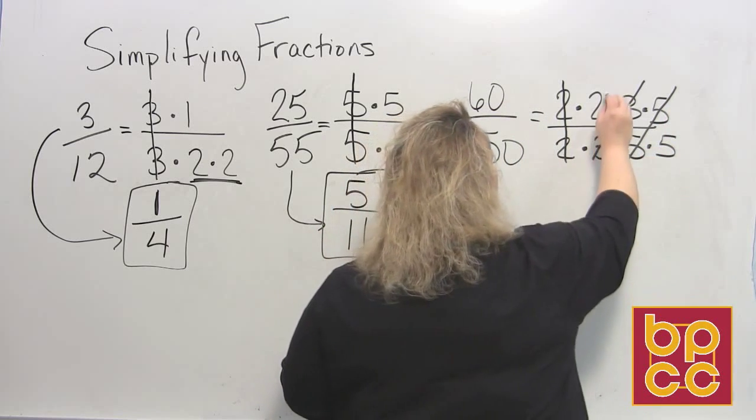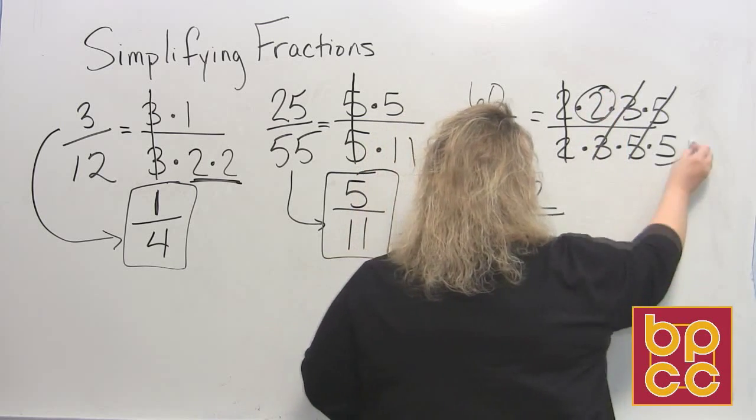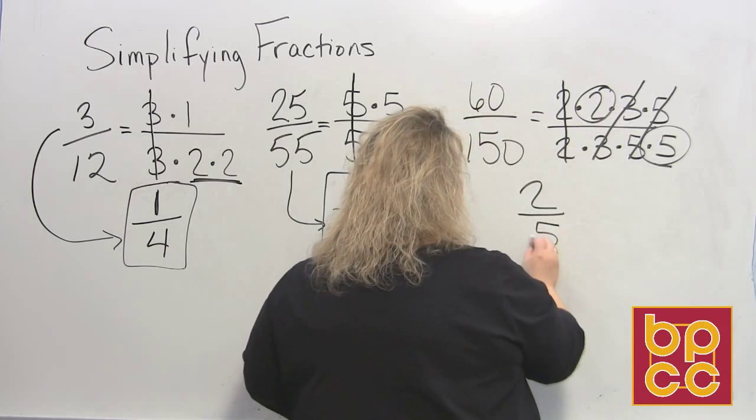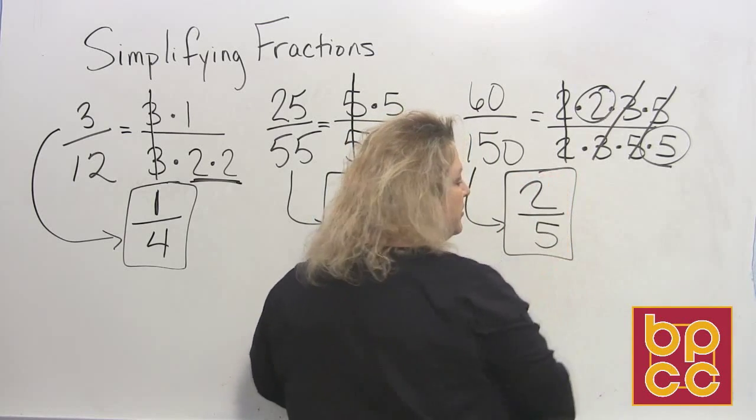And then you want to look at, well, what do they have left? The numerator has a 2 left. The denominator has a 5 left. So 60 over 150 reduces to the small fraction 2 fifths.